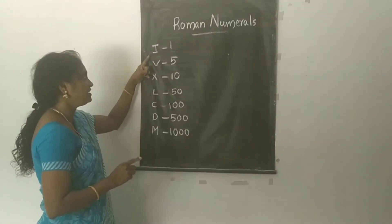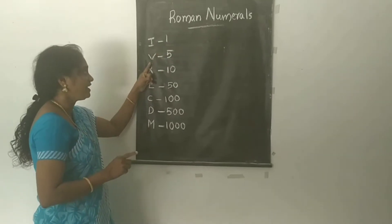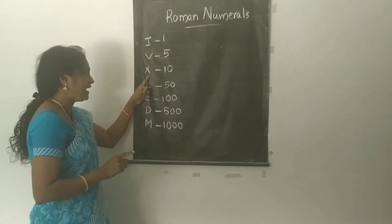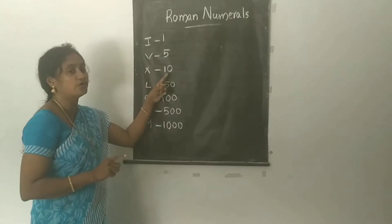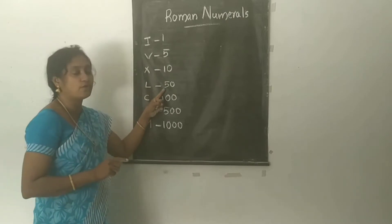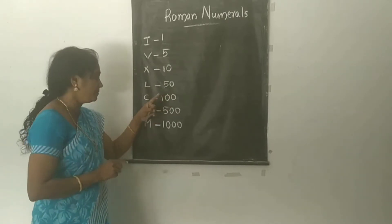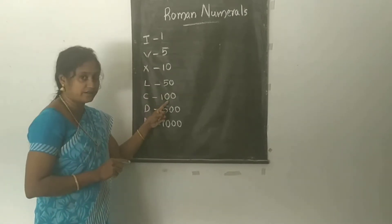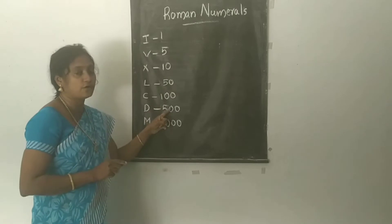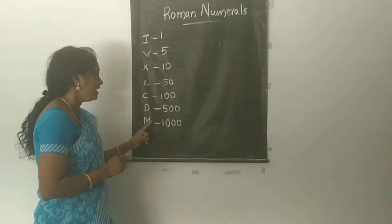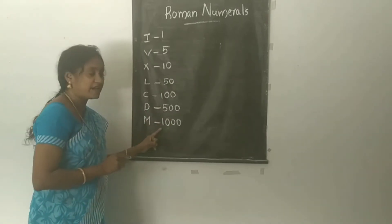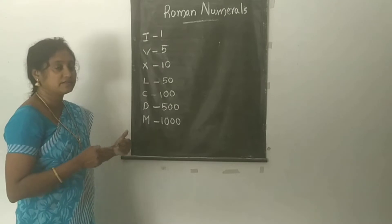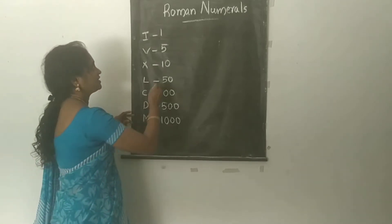I stands for 1, V stands for 5, X stands for 10, L stands for 50, C stands for 100, D stands for 500, and M stands for 1000. Now we can write the Roman Numerals.